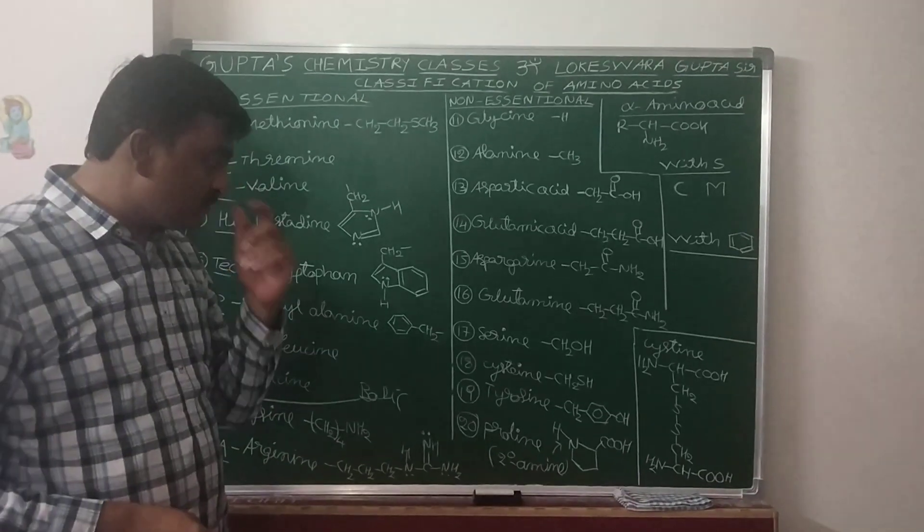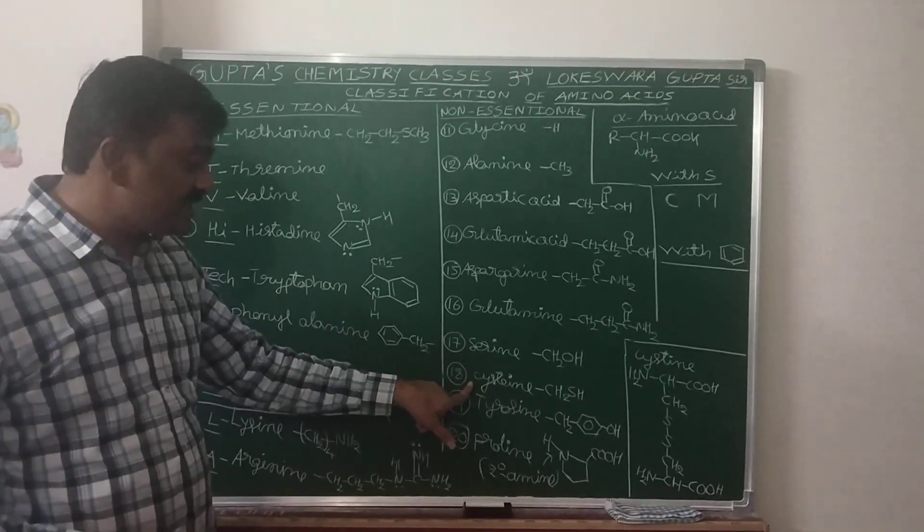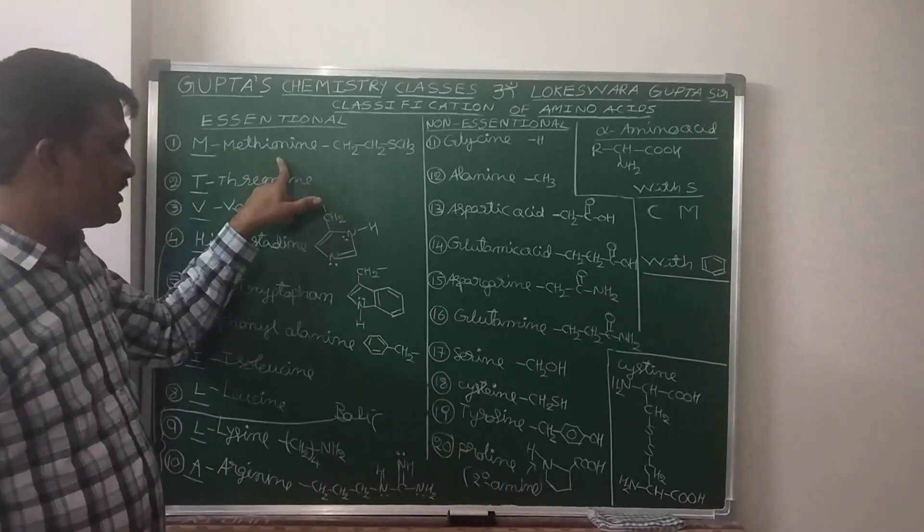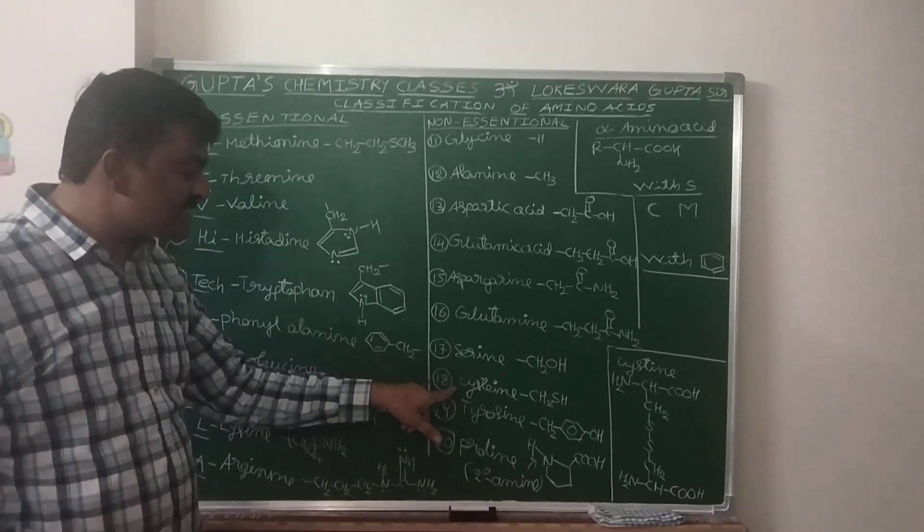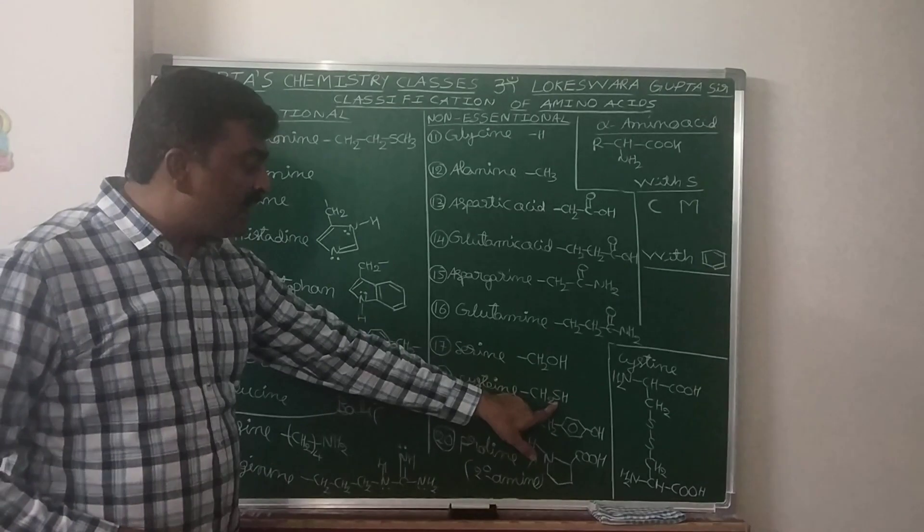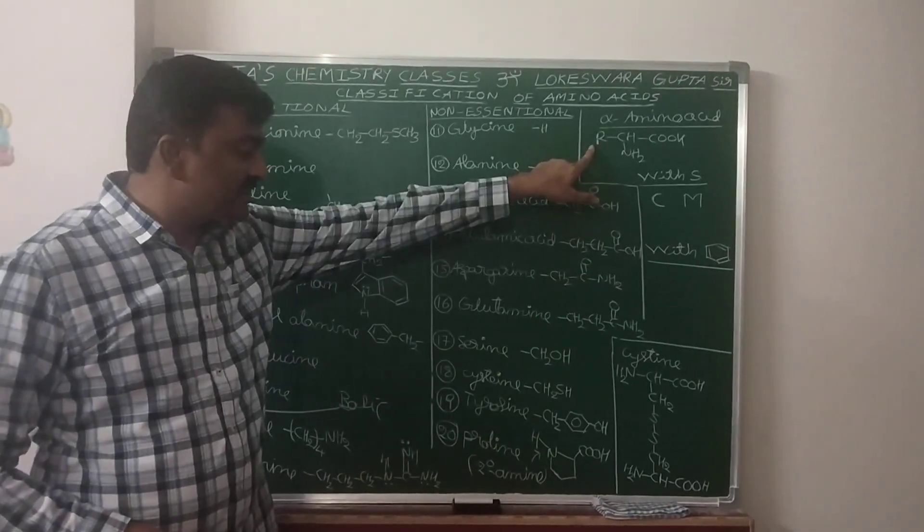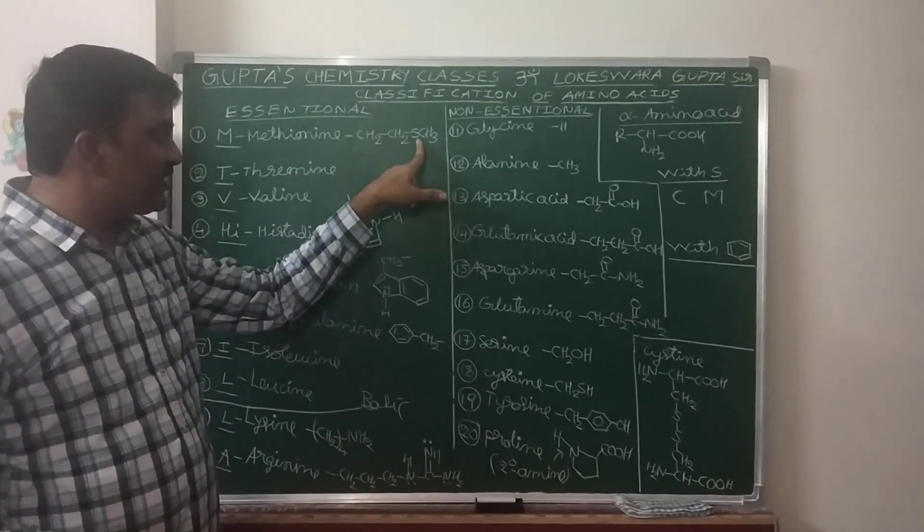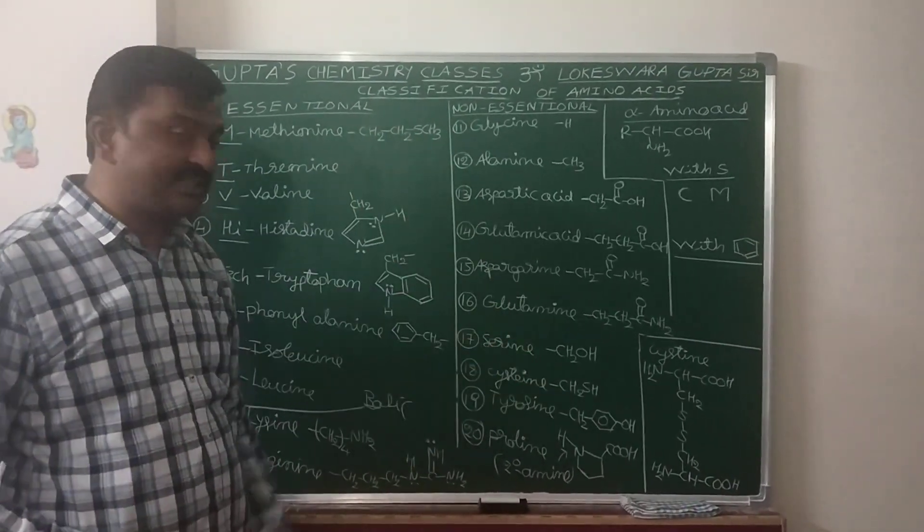Cysteine and Methionine. In cysteine, thioalcohol functional group present in the alkyl side chain. In methionine, thioether functional group present. So in these two, sulfur.